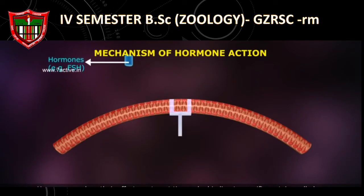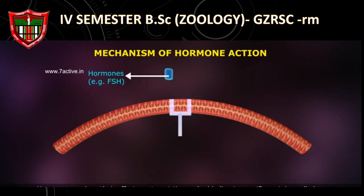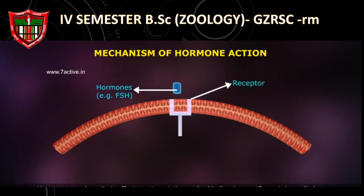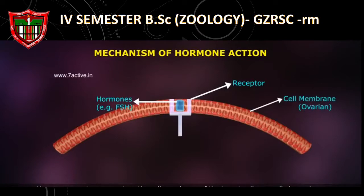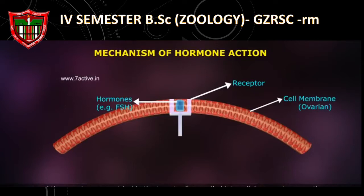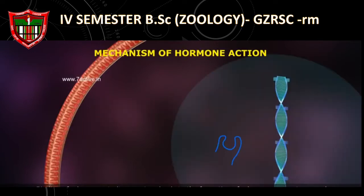Mechanism of Hormone Actions. Hormones produce their effects on target tissues by binding to specific proteins called hormone receptors, located in the target tissues only. Hormone receptors present on the cell membranes of target cells are called membrane-bound receptors, and receptors present inside the target cells are called intracellular receptors, mostly nuclear receptors.